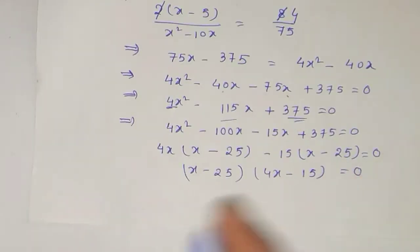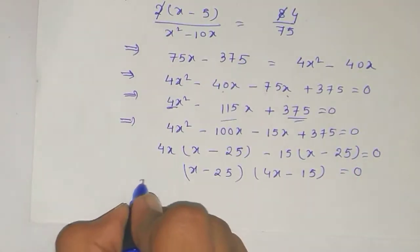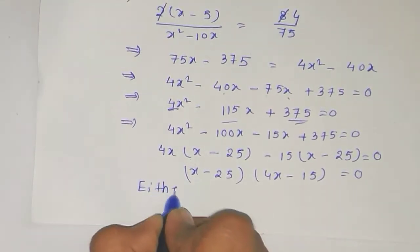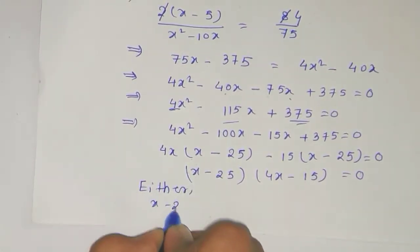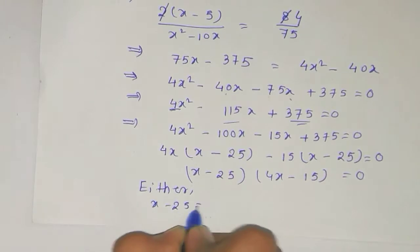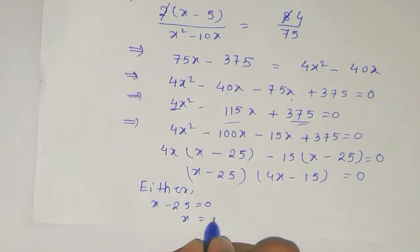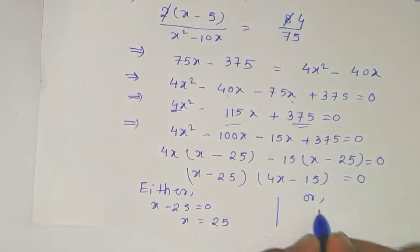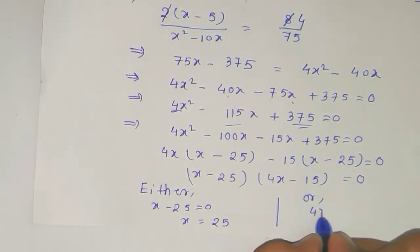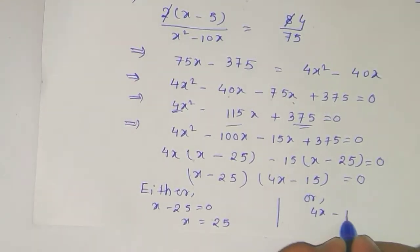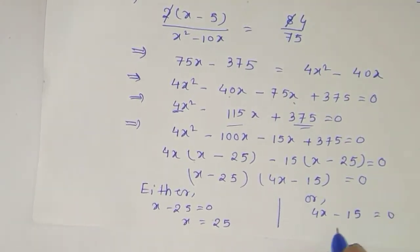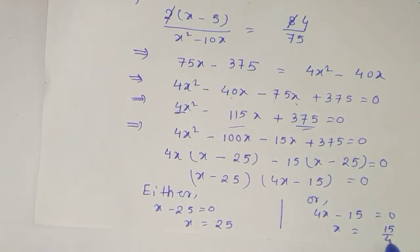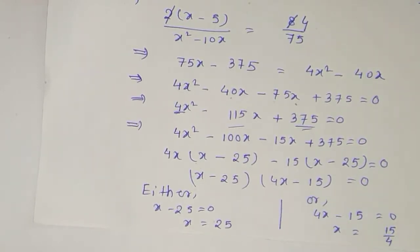From the factorization, either x minus 25 equals 0, giving x equals 25, or 4x minus 15 equals 0, giving x equals 15/4.